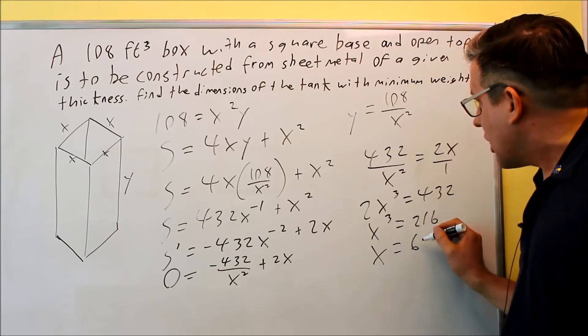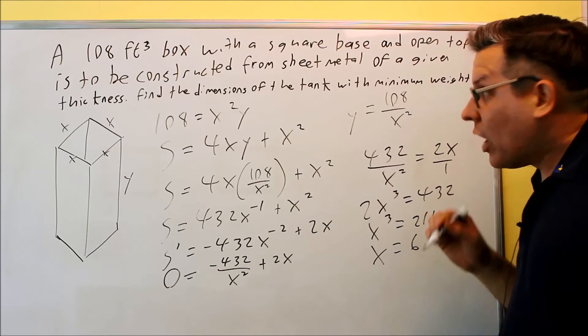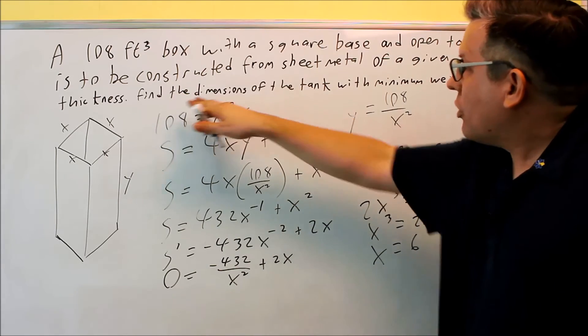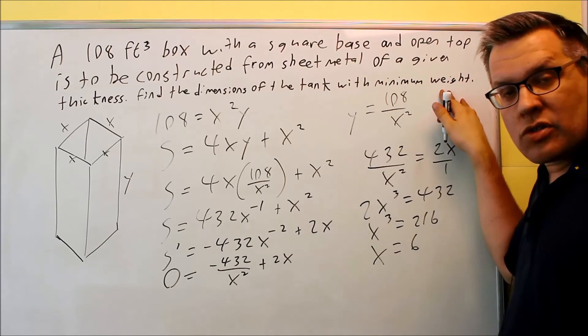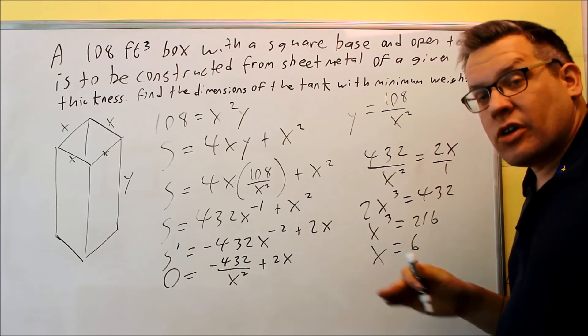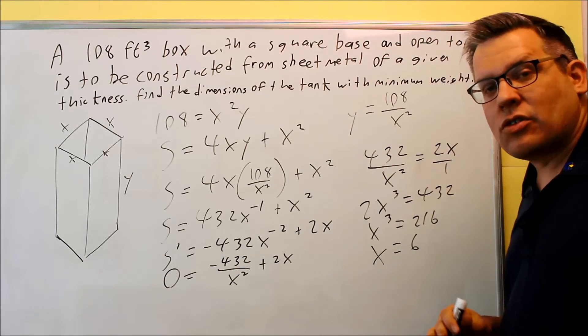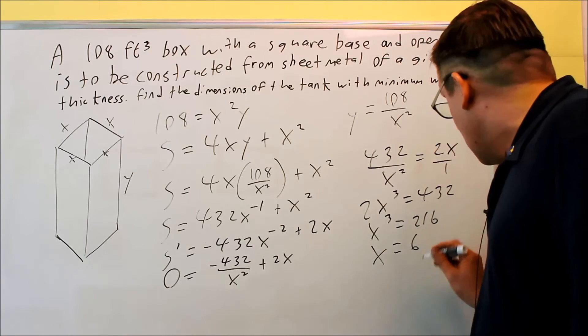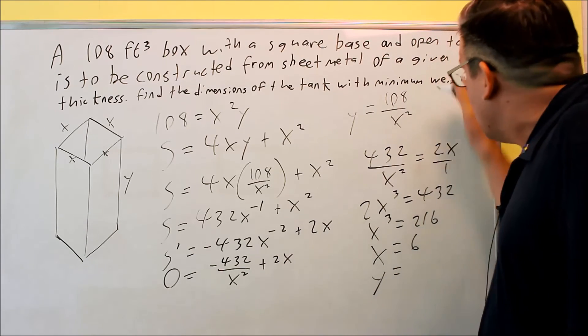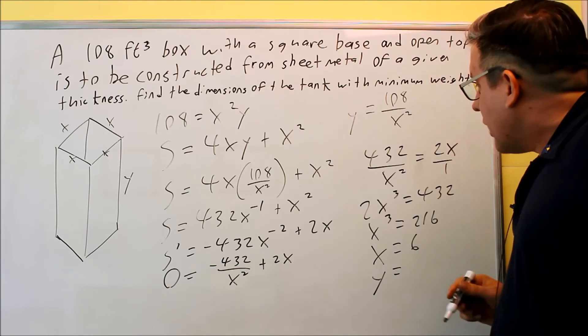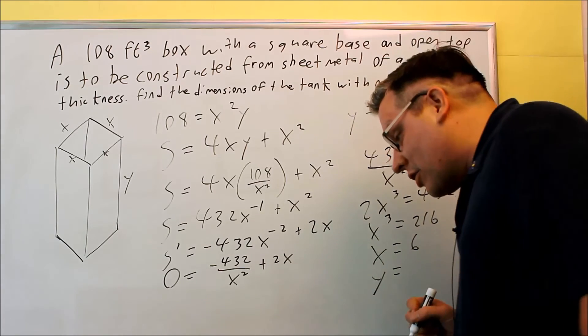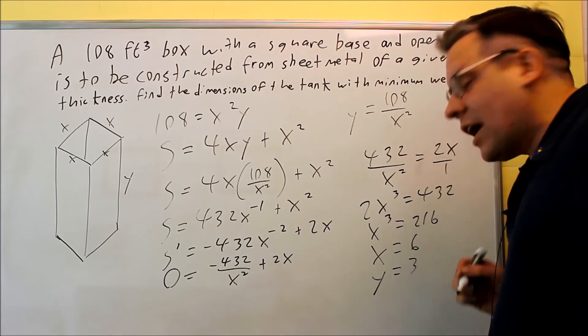So now that X is 6, we can put it back up into here and find the Y value. It's asking for the dimensions of the tank with the minimum weight, so they're not asking for the actual surface area. They only want dimensions, so they're only asking you for the X and the Y in this case. So if I put that back into this one, I have 108 divided by 36, and if I do that, I get 3.